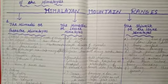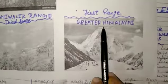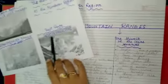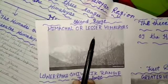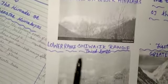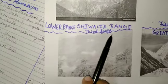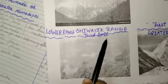Here I have some pictures to show you. The first range you can see is the Greater Himalayas, also called the Himadri range. The next range is Himachal, also called the Lesser Himalayas. The last range is the Shivalik range, also called the Lower Range.